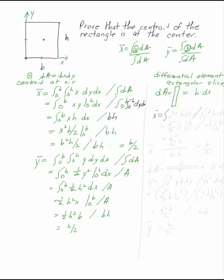X bar is the integral from 0 to b of x times h dx divided by the integral from 0 to b of h dx.